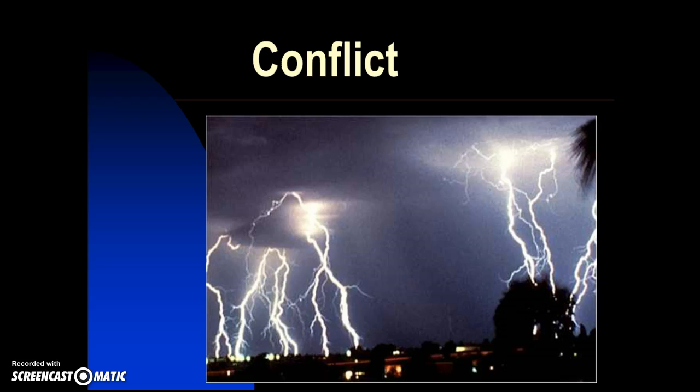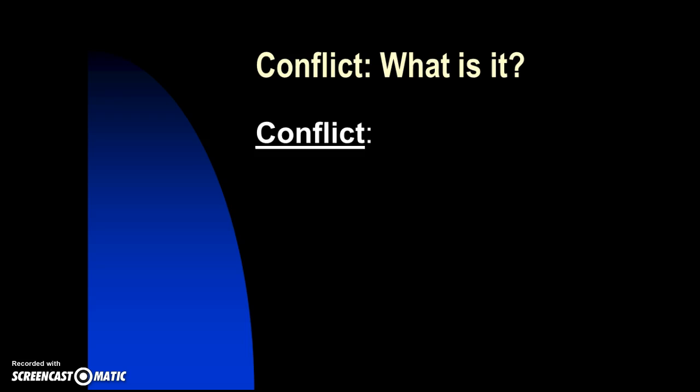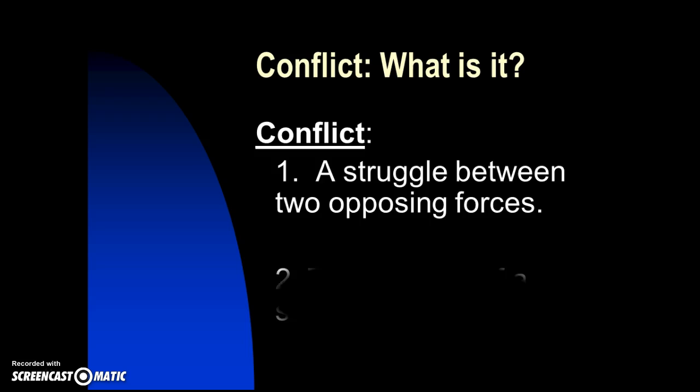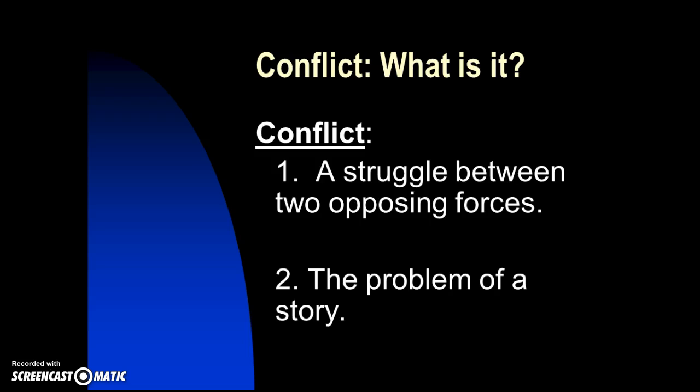Today we will be learning about conflict. Eventually we'll move to tension — how conflict can increase the tension in the story. So conflict, what is it? Write this in your notes if you did not know it: a struggle between two or more opposing forces. A quicker definition — the problem of the story. Conflict is the problem in the story. There can be more than one conflict, more than one problem. Problem, conflict — same deal.